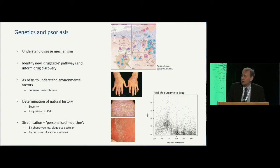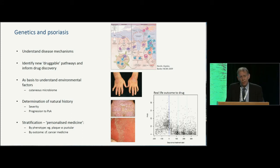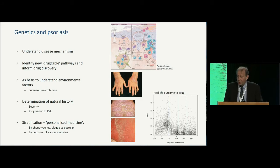With respect to psoriasis, why do we need to do genetics? We need to understand disease mechanisms. We need to identify new drug pathways. We need to understand environmental factors, and if we had a level genetic playing field, understanding the environmental factors would be a lot easier. We have very little understanding of the natural history of the disease — who's going to get severe disease, who's going to progress to psoriatic arthritis. And in this age of personalized precision medicine, can we stratify the disease, both in terms of phenotype and outcome?